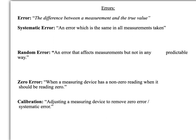There are a couple of types of error you need to know about: systematic error and random error. Systematic error is a type of error which is the same in all measurements taken. For instance, if I had a clock and my clock was five minutes fast, whenever I tried to tell the time it would always be five minutes fast. That's the same error each time, so that's a systematic error.